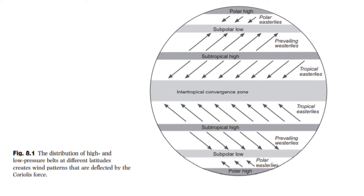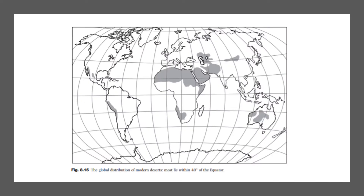Each hemisphere's wind direction is deflected by the Coriolis effect caused by the Earth's rotation. This concentration of heat and wind near the equator, called the intertropical convergence zone, creates the perfect conditions for a desert environment. For this reason, modern deserts mostly appear within 40 degrees of the equator and on the western side of the landmass.